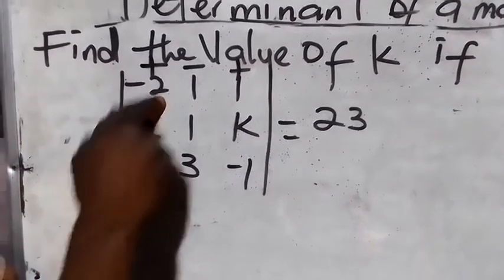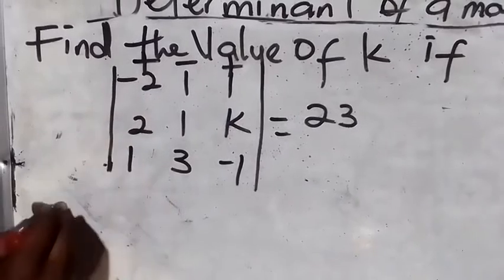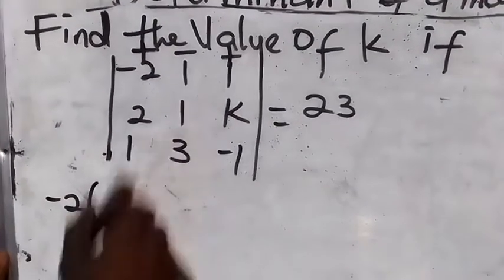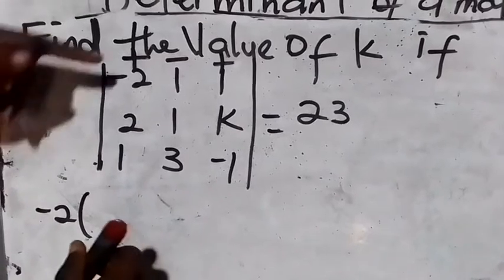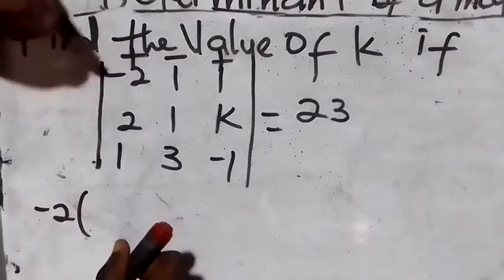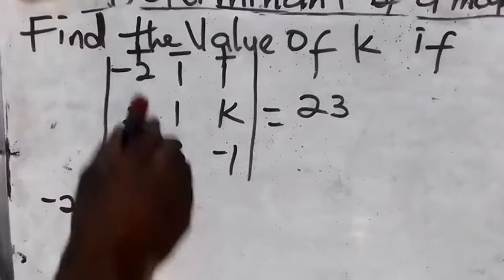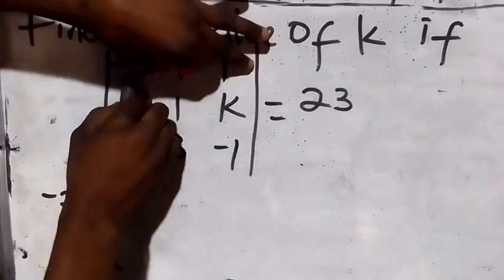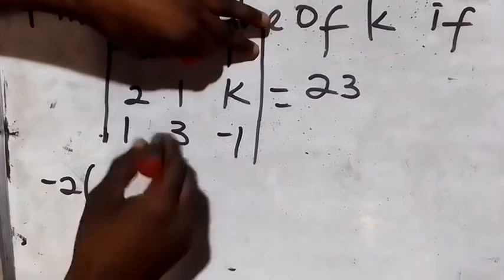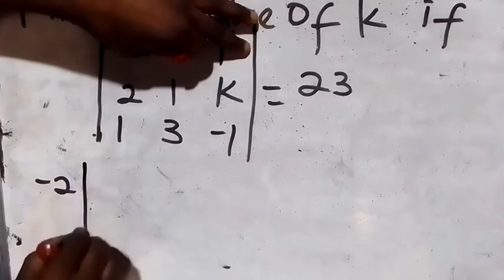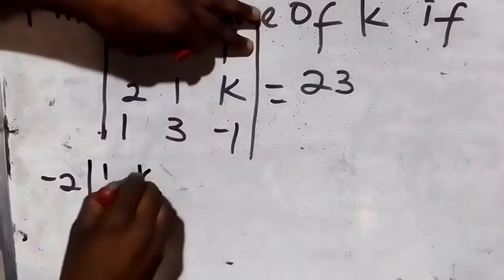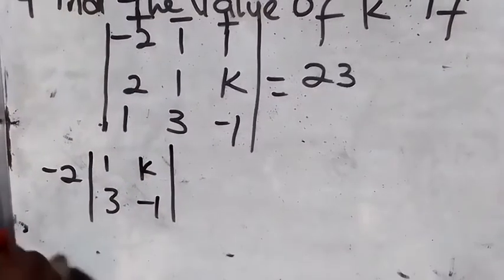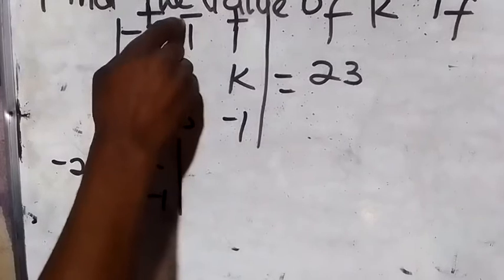Now take the first number, which is two. Plus times minus minus two — put that in your bracket. When looking for three by three determinants, you cross out the vertical and horizontal of that number. If I cross out the row and column of two, what do I have? I have one, three, one, three, k, minus one.